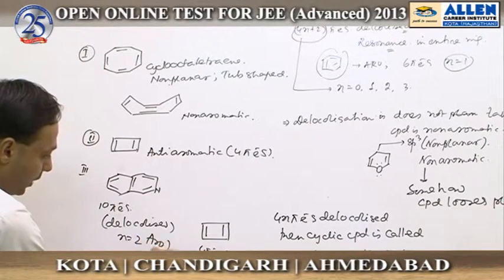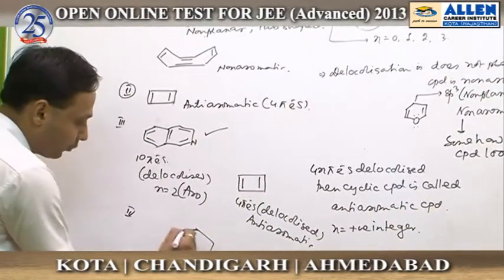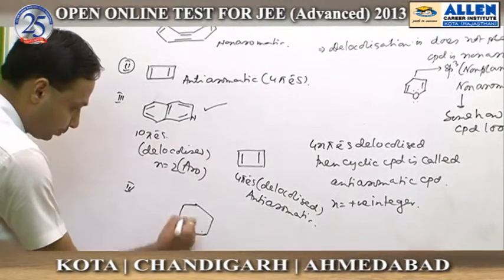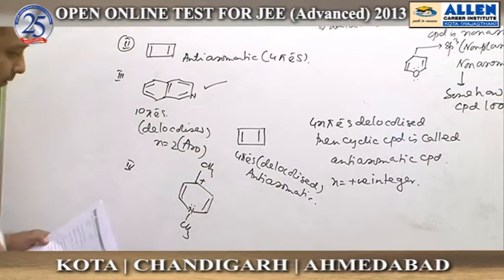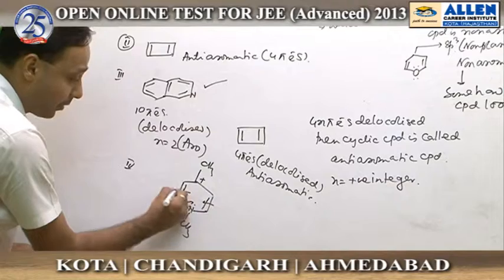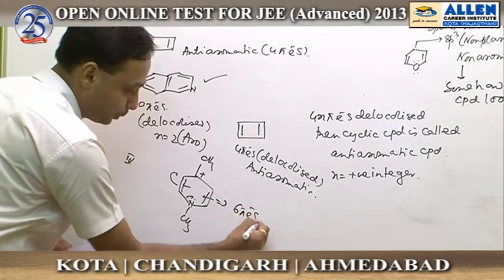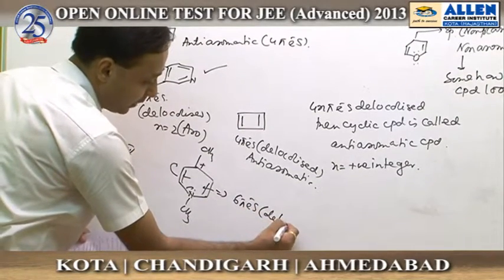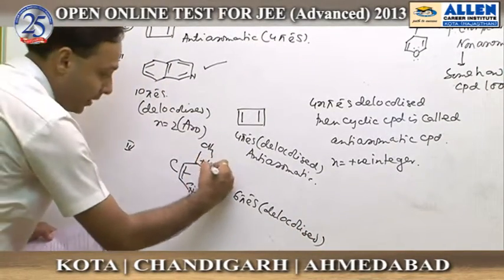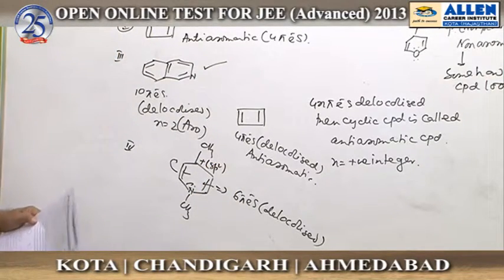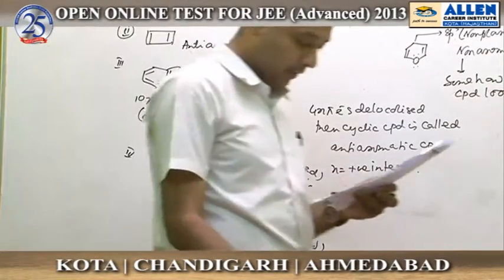For compound four: it has two pi electrons, and a lone pair undergoes resonance, giving a total of six delocalized pi electrons. Resonance takes place in the entire ring because the carbocation is sp2 hybridized. All conditions of aromaticity are satisfied, so compound four is also aromatic.